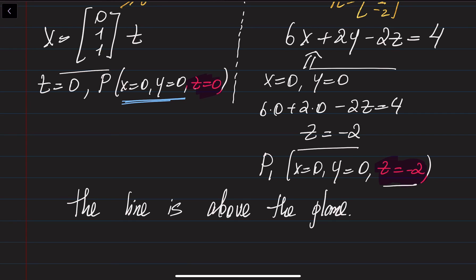In summary, this is how we compare lines and planes when they are parallel: first verify parallelism by checking that v · n = 0, then compare the z coordinates of points that share the same x and y coordinates to determine whether the line is above, on, or below the plane.